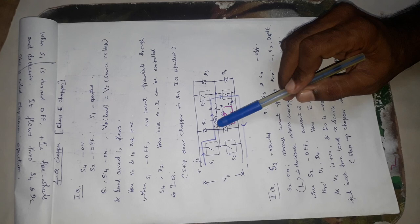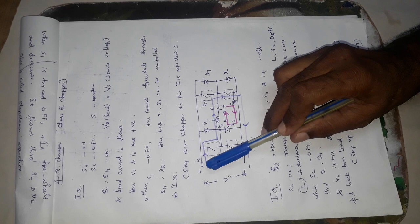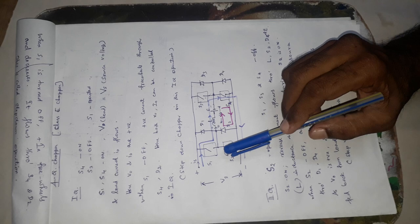This operation is also called a step-down chopper operation. The blue line indicates the chopper operation, and the rose color indicates the freewheeling operation.